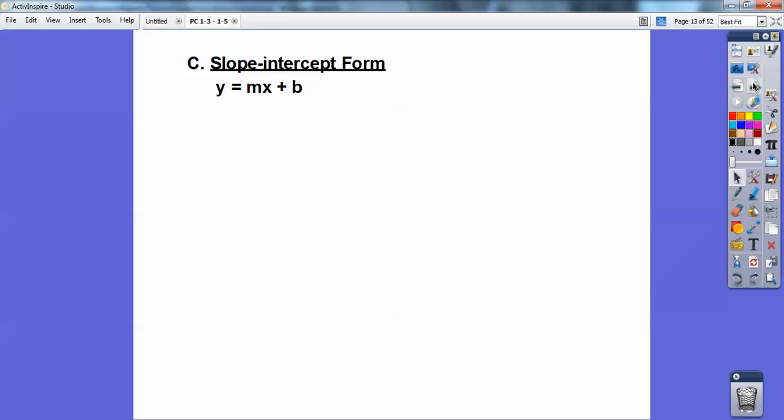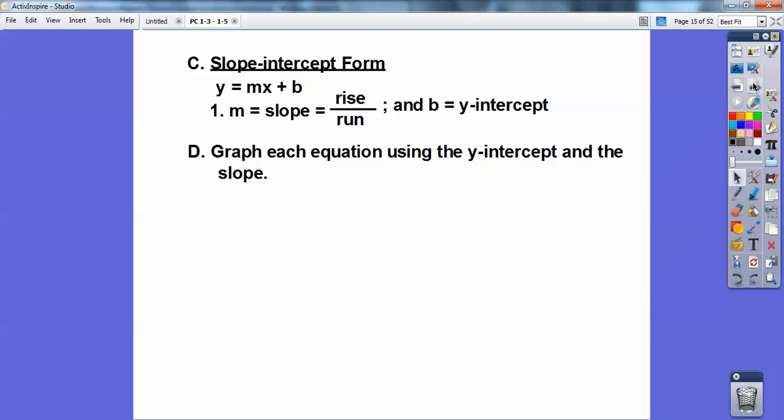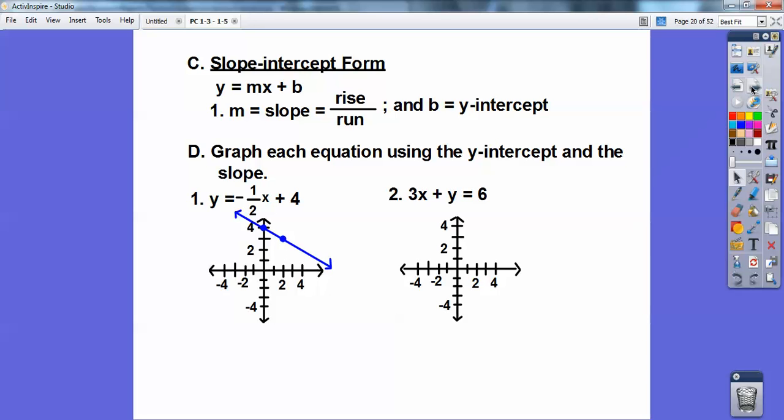Slope-intercept form. You guys have seen this: y = mx + b. The slope is rise over run. Your b is your y-intercept where it crosses the y axis. Graph the line using the y-intercept and the slope. I'm going to graph that plus 4 right there, then go down one to the right two. See this minus? This minus goes only for the top. So down one to the right two. Graph this plus 4 first, then down one to the right two and plot another point. Connect it right there.